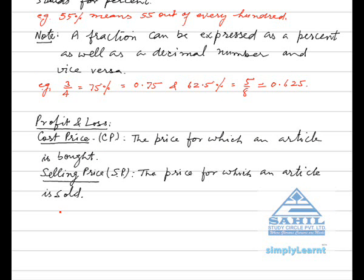Profit and Loss. Cost Price (CP): The price for which an article is bought is known as its cost price. Selling Price (SP): The price for which an article is sold is called its selling price.